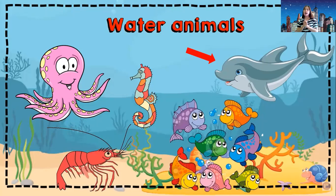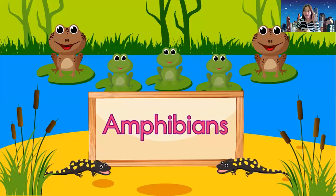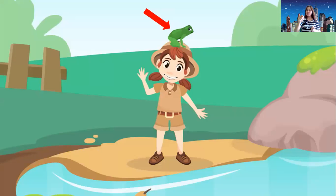Do you know that there are animals that can live both on land and in the water? Yes, there are animals that can live both on land and in the water. What do we call them? We call them amphibians. Yes, we call these animals amphibians — they can live on land and they can live in the water. What are those animals? Okay, look — what's on the girl's head? It's a frog. Yes, a frog can live on land and can live in water.